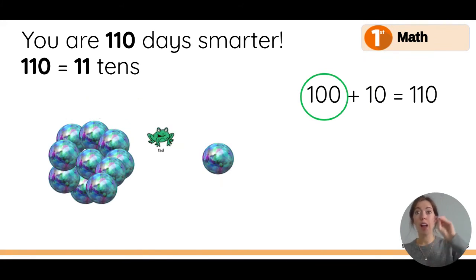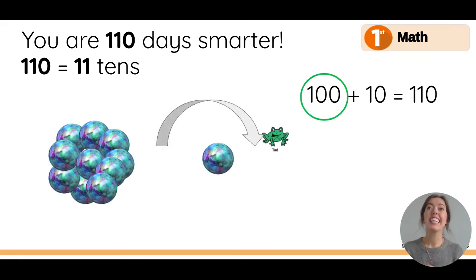Tad went all the way around the century circle. That's 100, and now he's going to hop over the next 10. 100 plus 10 equals 110. Let's do one more activity.